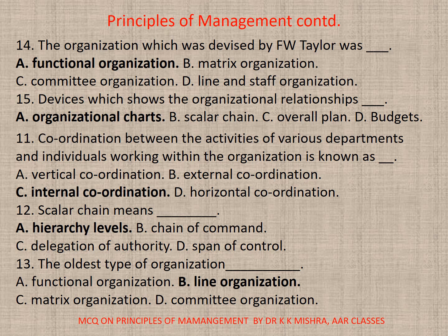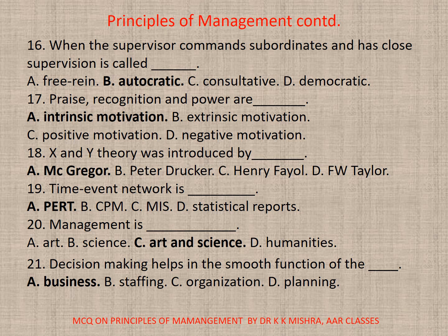Question 11: Coordination between the activities of various departments and individuals working within the organization is known as — correct option is c) Internal coordination. Question 12: Scalar chain means — correct option is a) Hierarchy levels. Question 13: The oldest type of organization — correct option is b) Line organization.